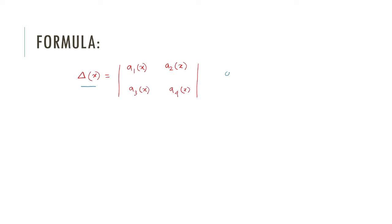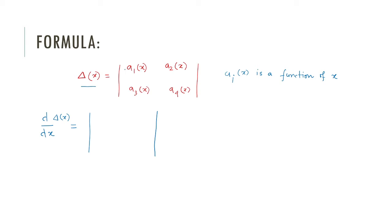One thing to observe is that each a_i(x) is a function of x. So if we get a determinant where entries are some function of x, then obviously we can find out the differentiation of that particular determinant. Now let's see how we can find out the differentiation. If we try to write down the formula — d/dx of delta(x) — we first take the first row, and take the derivative of each of the entries of the first row. So the first row, first column will be a1'(x).